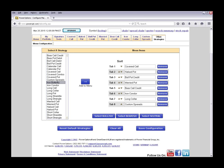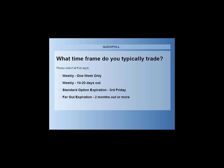Now I'm launching my second poll: what kind of options expiration time frame are you looking for? Are you mainly doing weekly options — five to seven days out? Are you doing the two or three week continuous weekly series? Are you looking at standard option expiration, the third Friday of a given month? Or are you looking at far-out expiration, maybe buying calls or puts three to five months out?